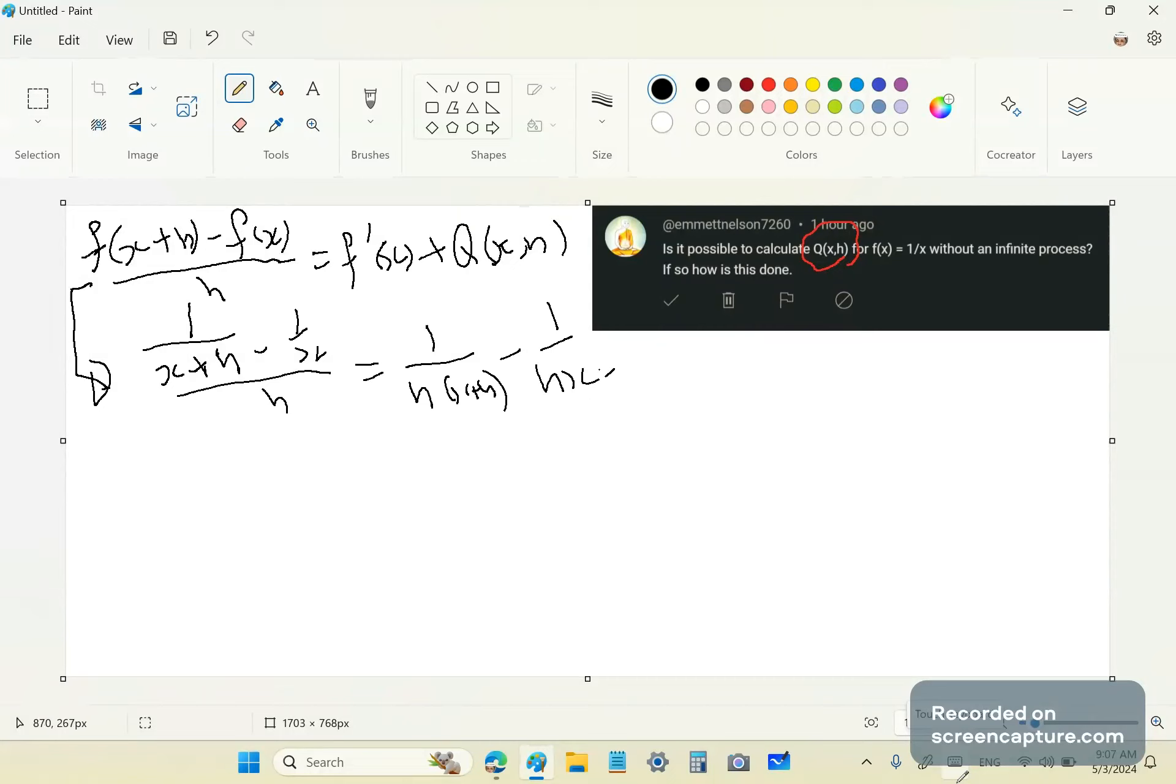We can actually use a common denominator here. So let's say that we have h(x)(x+h). And then this here goes into the denominator x times, so it's x minus, and that goes into there (x+h). And what you'll have there is -h over h(x)(x+h). And if you cancel out the h, you'll have -1 over x(x+h).